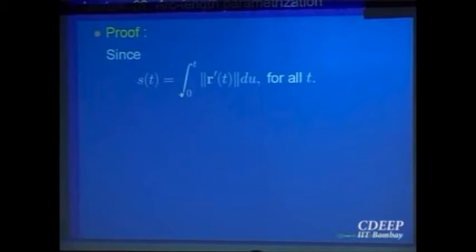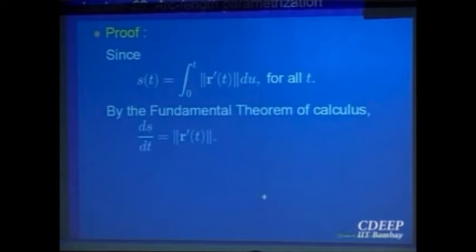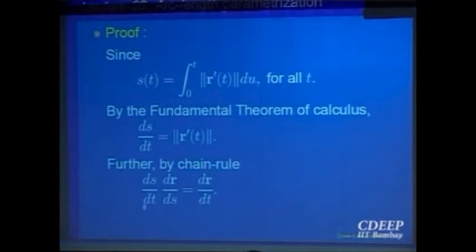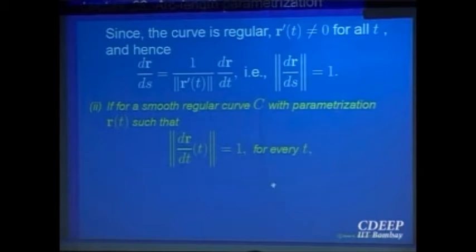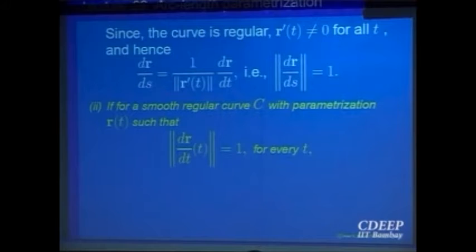Since the length from 0 to t is given by this formula, ds/dt is just the norm of the tangent. By chain rule, dr/ds is 1 over |r′(t)| because the curve is regular — not equal to zero — and the length equals 1. Another advantage of arc length parameterization is that if a curve has the property that it is unit speed, then it is essentially arc length parameterization.